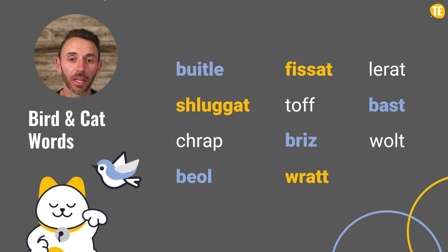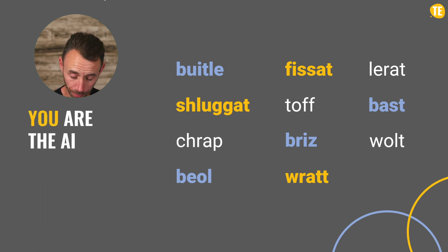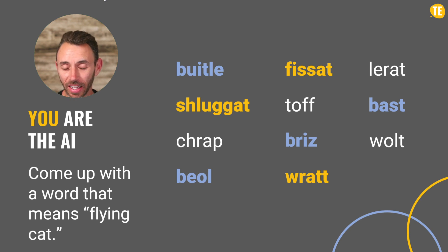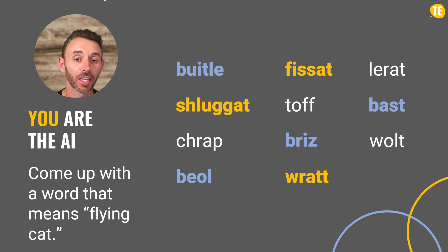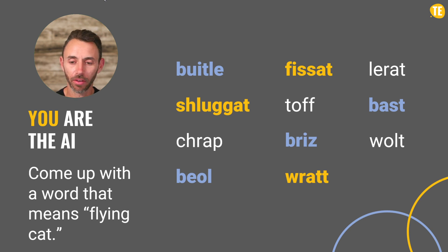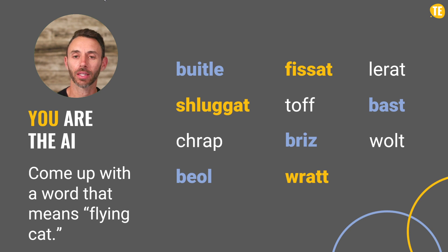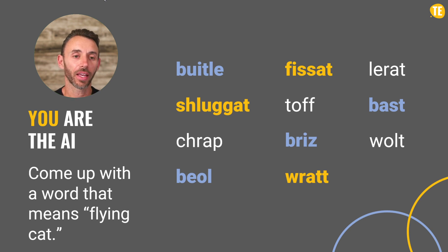So we now have two patterns for this new language: cat words must contain a double letter and end with an 'at' sound, and bird words start with a B. Now you have all the information you need to be a generative AI for this language. I want you to combine the patterns we know to generate a brand new word that doesn't exist — a word that means 'flying cat.' Give them 30 seconds to a minute. You're looking for any word that starts with a B, contains double letters, and ends with an 'at' sound. That's it — you understand how generative AI works. It collects and learns a number of patterns, then combines those patterns to generate new and novel information.